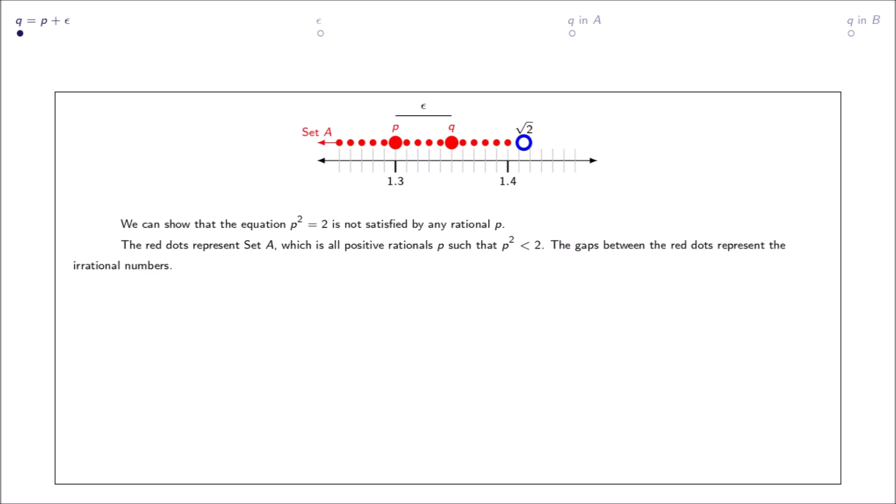The gaps between the red dots represent the irrational numbers. In the first part of example 1.1, square root 2 was proven to be irrational and its location is the blue dot that lies between 1.4 and 1.5.